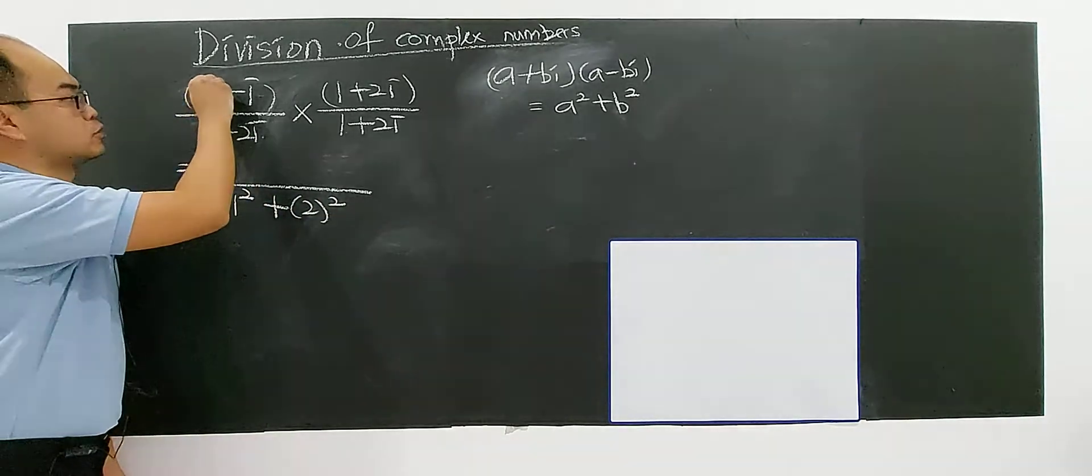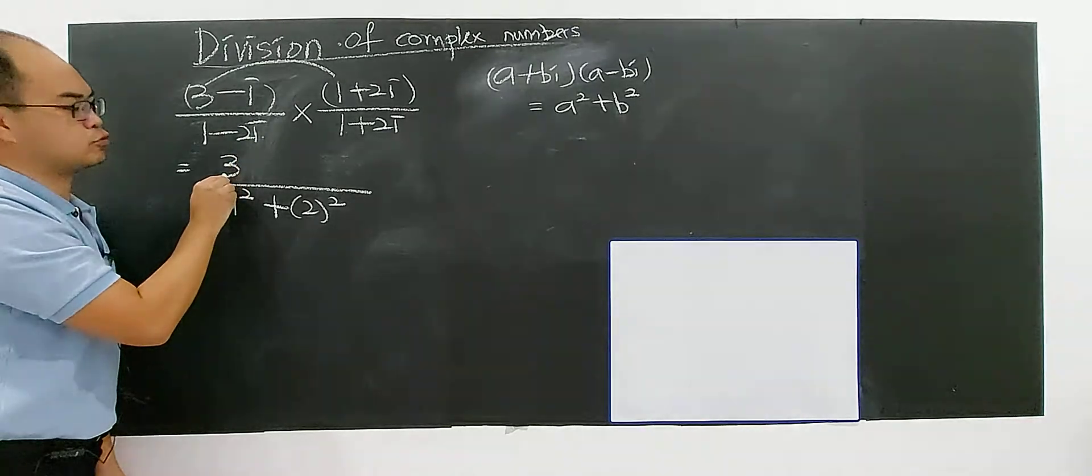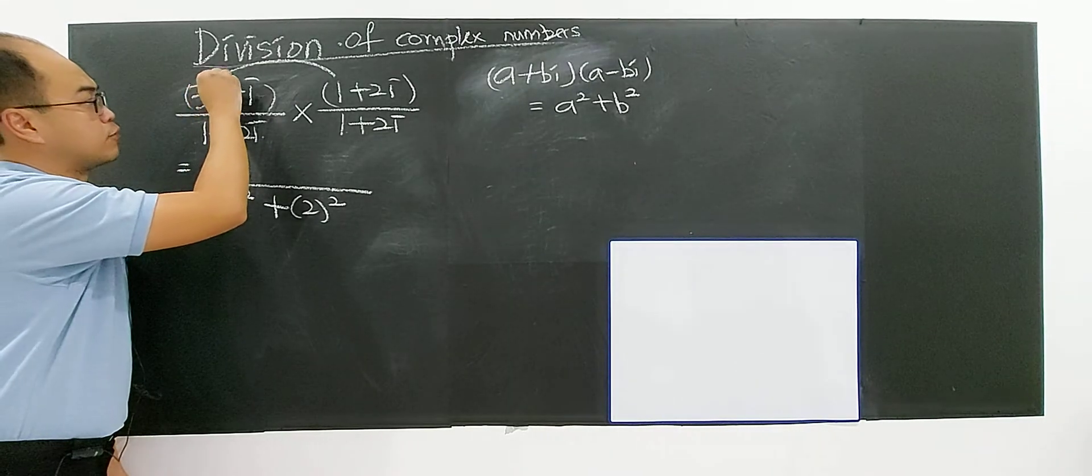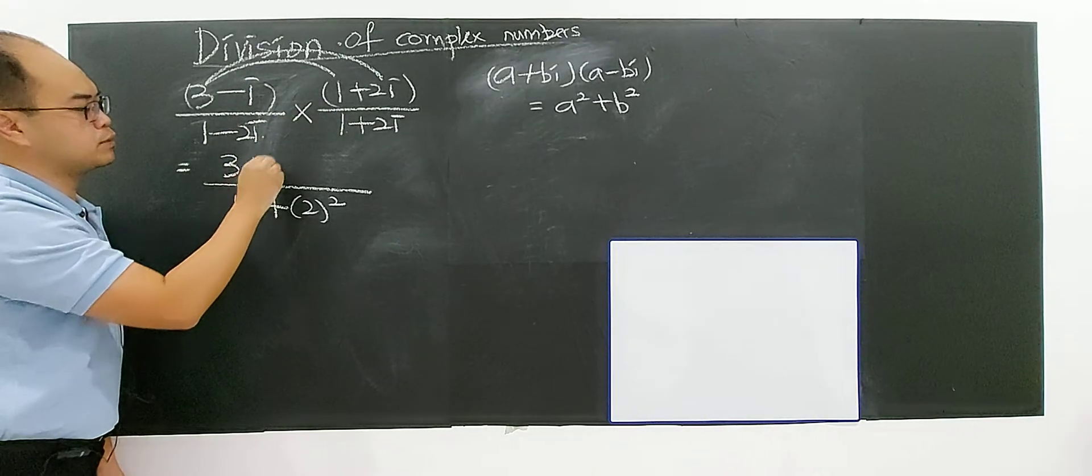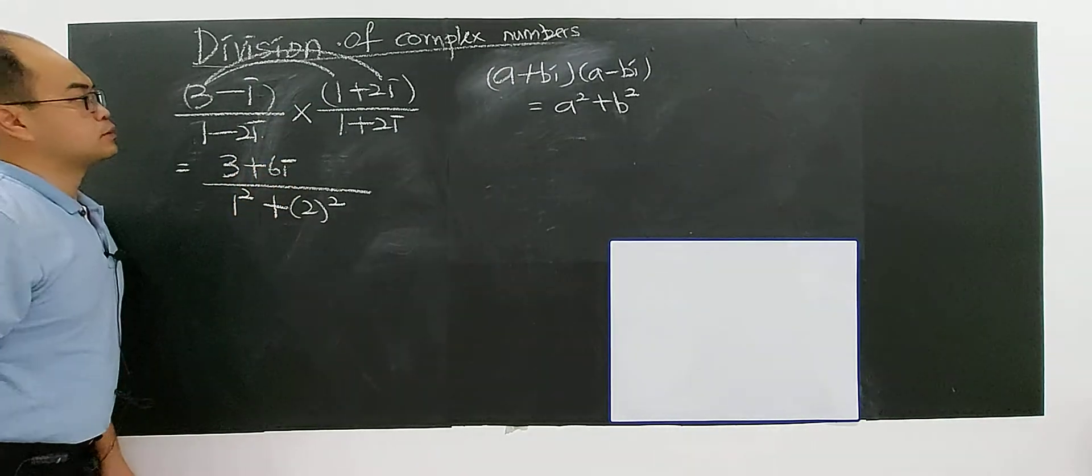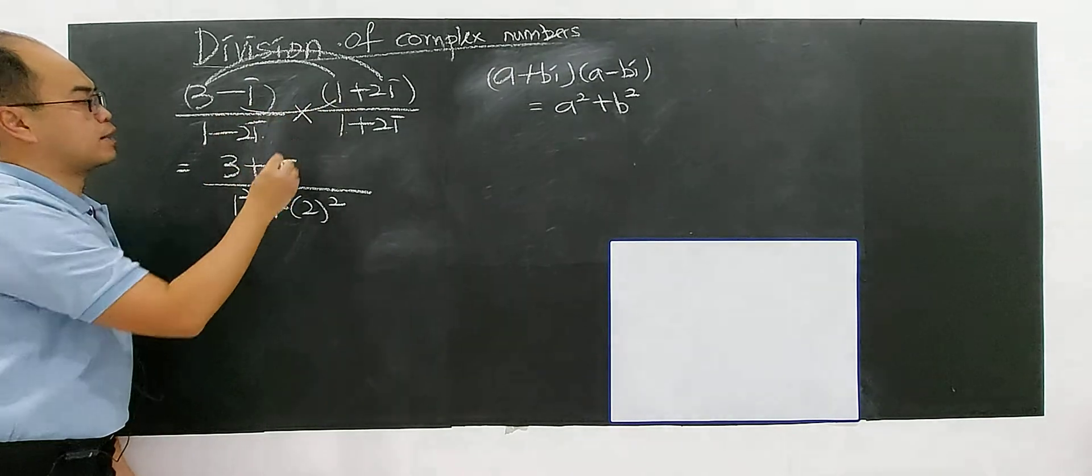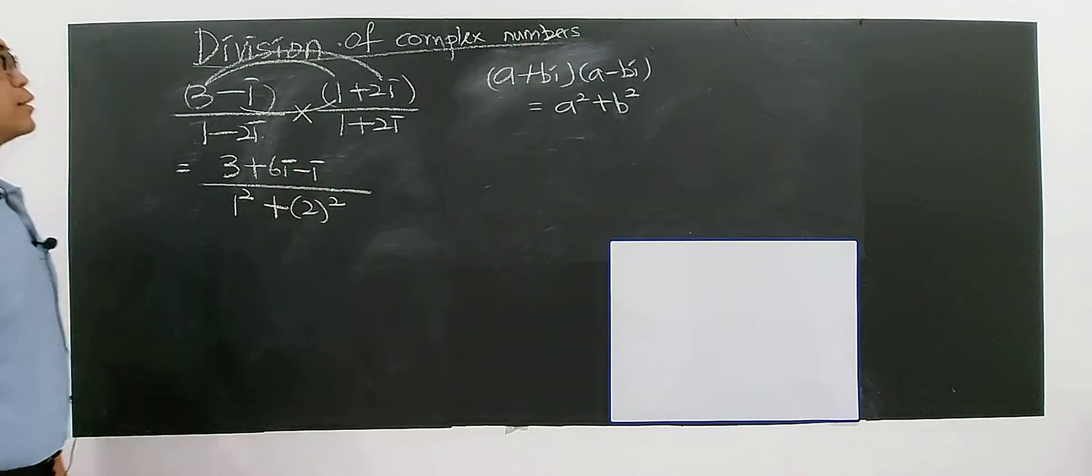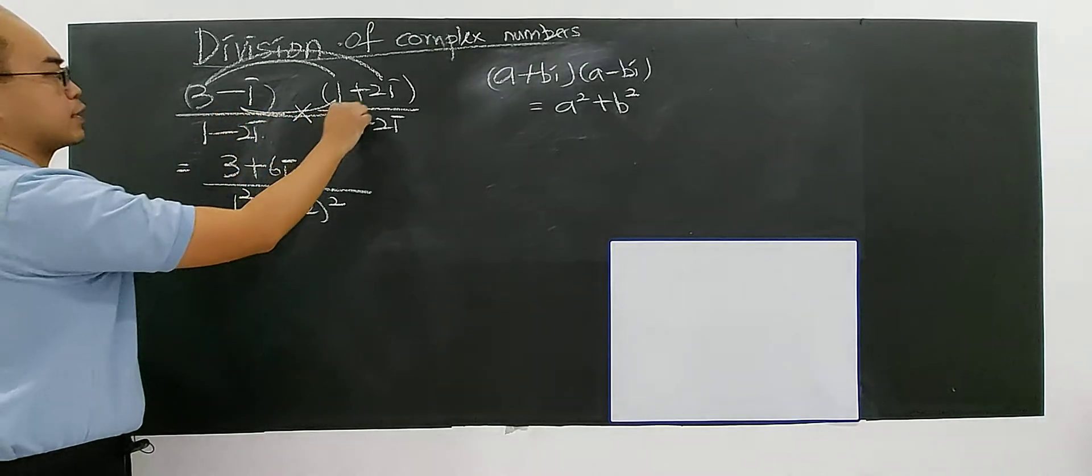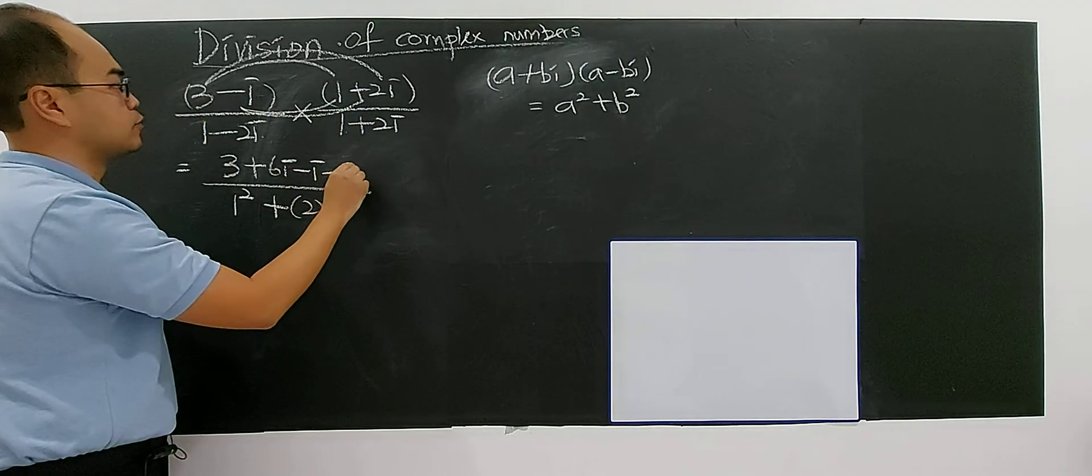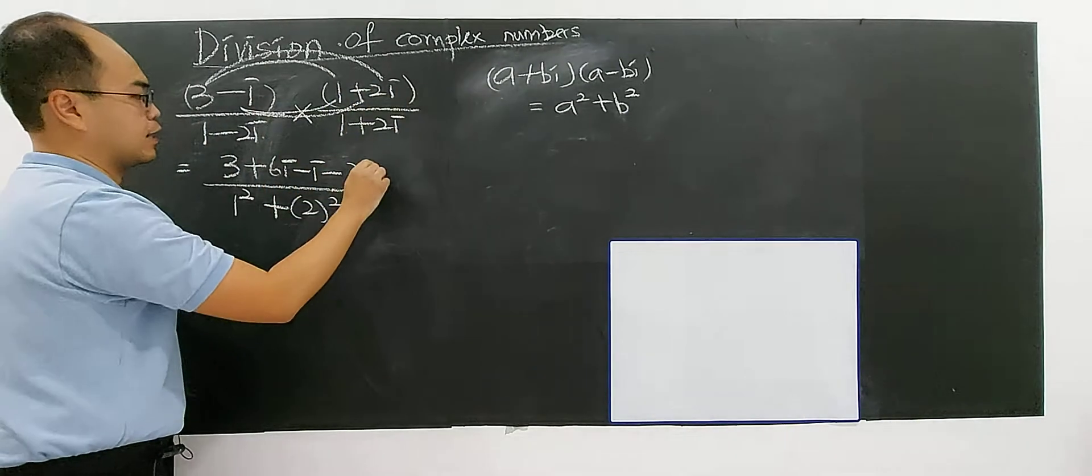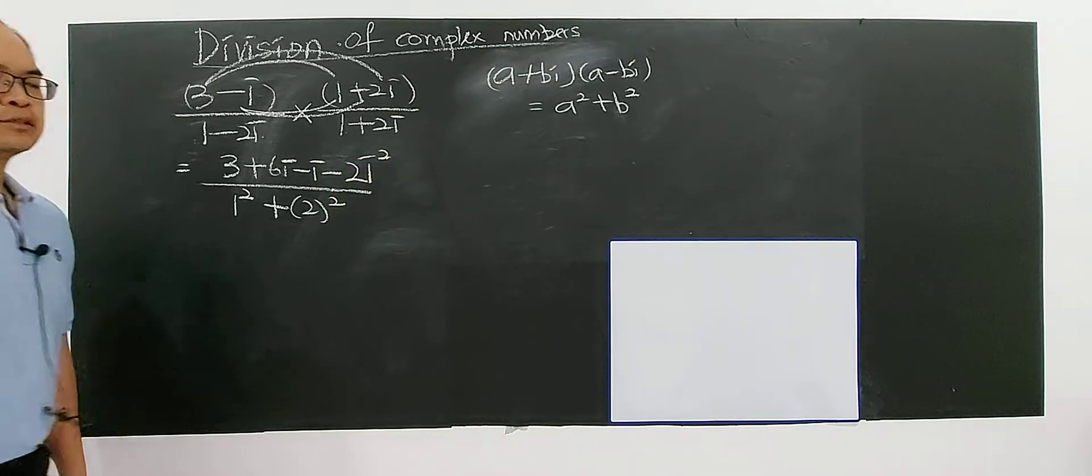So 3 times 1, you have 3. I have to multiply and expand one by one. So 3 multiply 2i will be 6i, and negative i, followed by negative positive, negative negative positive. So negative 2i times i equals i to the power of 2.